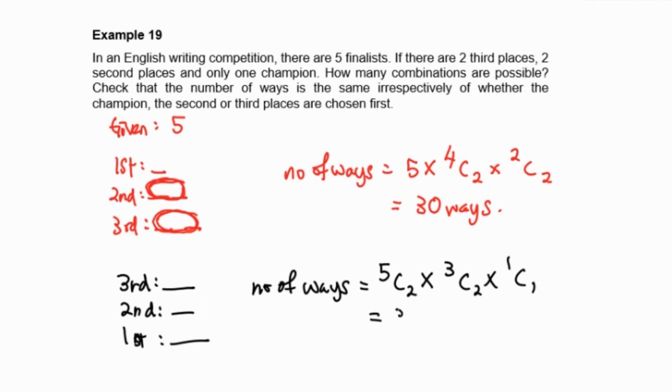So this also will give us 30 ways. Therefore, no matter whether we calculate from champion second to third place or third place second to first, they will not affect our outcome. So they will have the same combination. That's all, thank you.